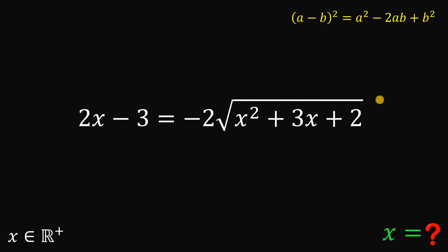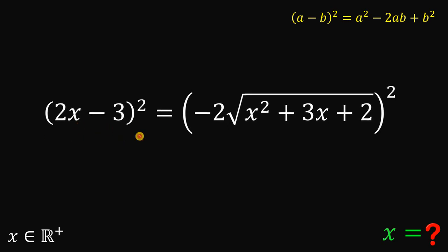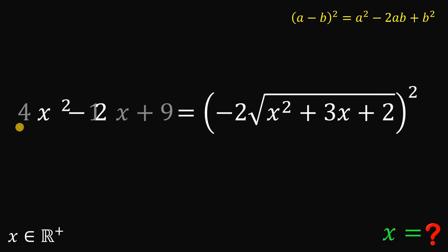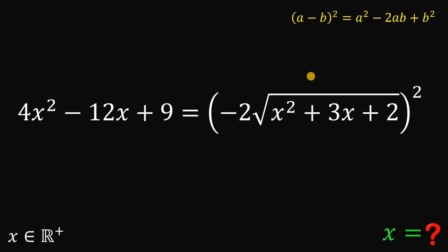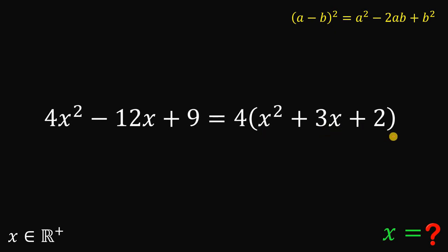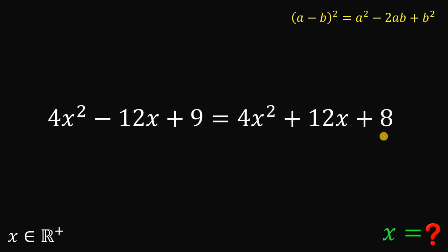Now, for the last time, to get rid of the square root symbol, let's square both sides again. On the left-hand side, we use the identity to get 4x squared minus 12x plus 9. On the right-hand side, negative 2 times square root of (x squared plus 3x plus 2), squared, gives us 4 multiplied by (x squared plus 3x plus 2). Distributing the 4 gives us 4x squared plus 12x plus 8.